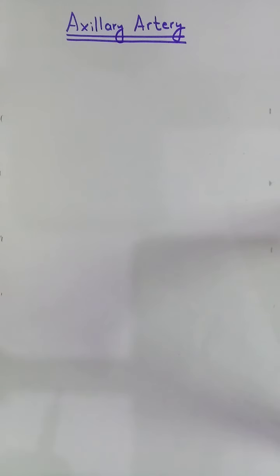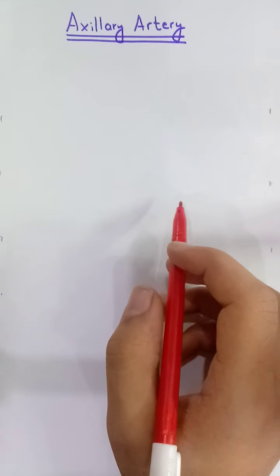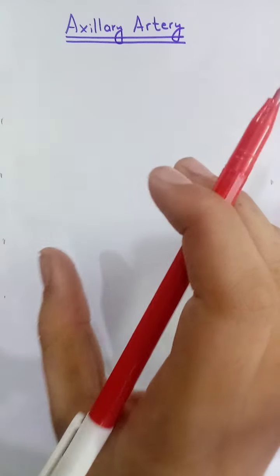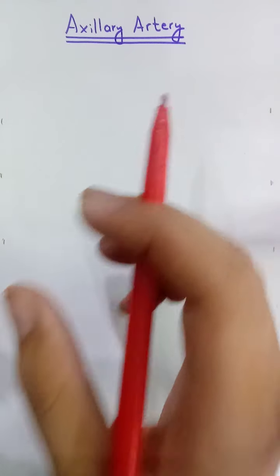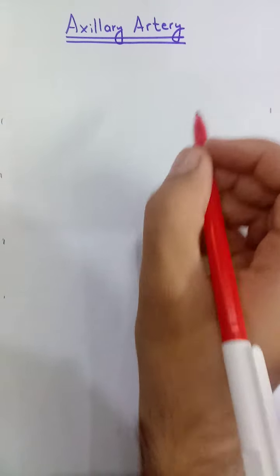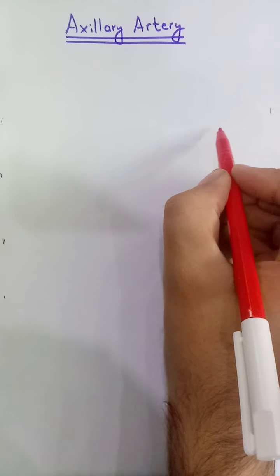Asalaamu Alaikum. Today we will discuss the axillary artery, which then changes to the brachial artery and supplies most of the upper limb. It is present in the axilla and is the continuation of the subclavian artery. We will look at its branches and its supply to various parts of the thoracic wall. Let's start and draw it.